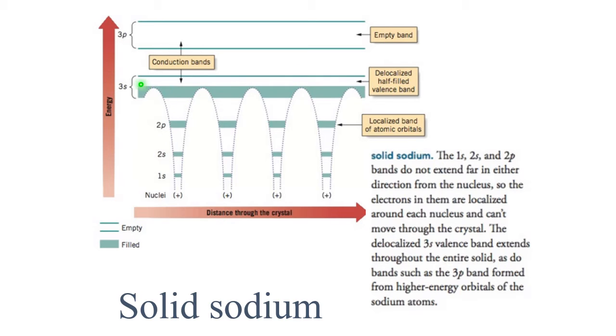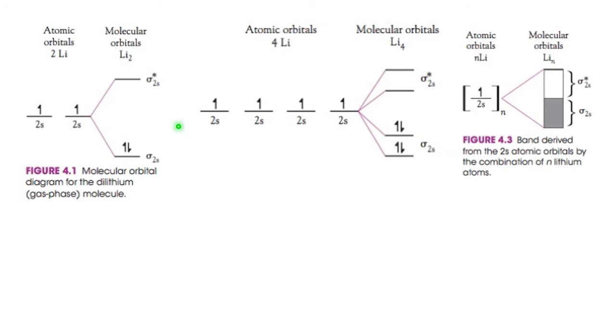Electrons can easily travel from one atom to another. They are not localized on atoms, and this is why conductivity occurs.